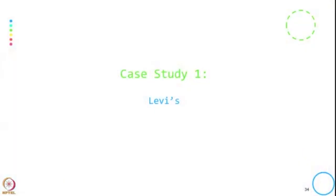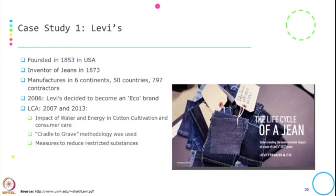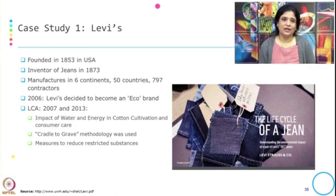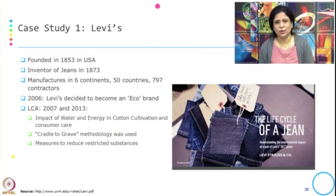To start with, let us take the first case study — the case study of Levi's, a pair of jeans. A little about the company: it was founded in 1853 in the USA. They are the inventors of jeans in 1873 and they manufacture their product in 6 continents, 50 countries, and with 797 contractors.